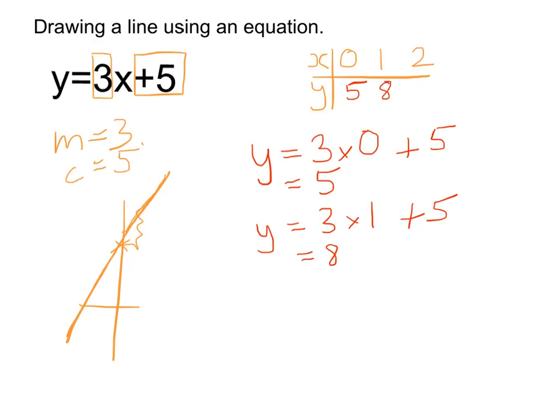And lastly, we have that x is 2, which we can then put into the equation. So we've got y is equal to 3 lots of 2, add the 5. 3 lots of 2 is 6, add the 5, 11. So the final one is 11.